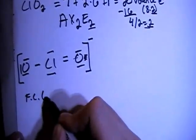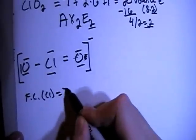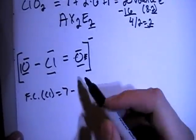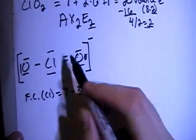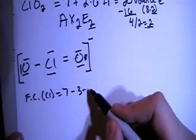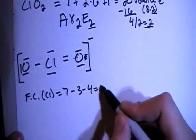So the formal charge on the chlorine is 7 valence brought in, minus 1, 2, 3 bonds, minus 1, 2, 3, 4 non-bonding electrons, which is a formal charge of 0, okay?